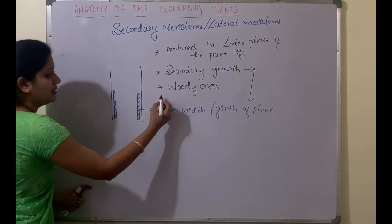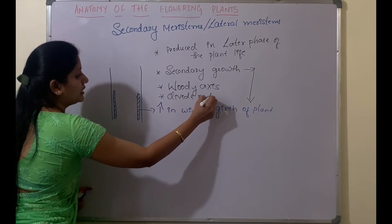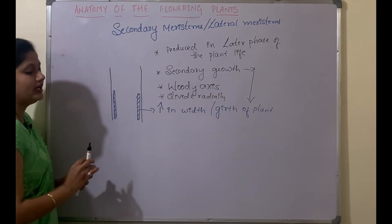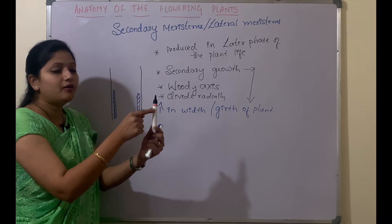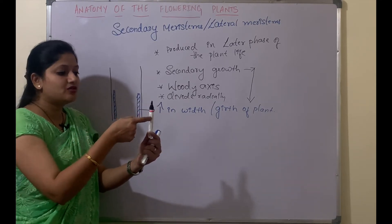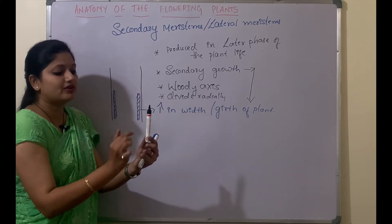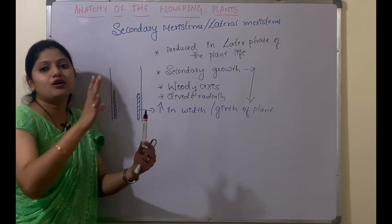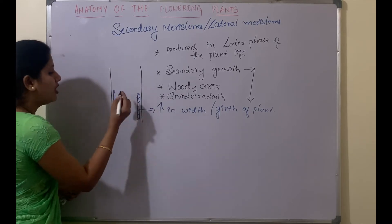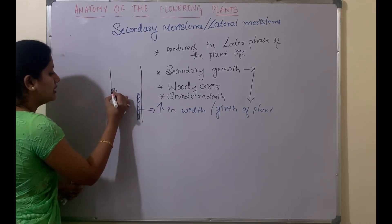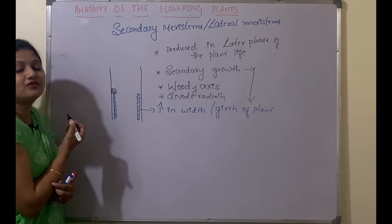The meristems present on the lateral sides start dividing radially. Radially means the meristem produces new cells outward from the axis — one cell here, one cell here, and so on around the circumference. So the circumference is now increased. The newly formed cells are found radially, and when they are formed radially, the girth or width starts increasing.